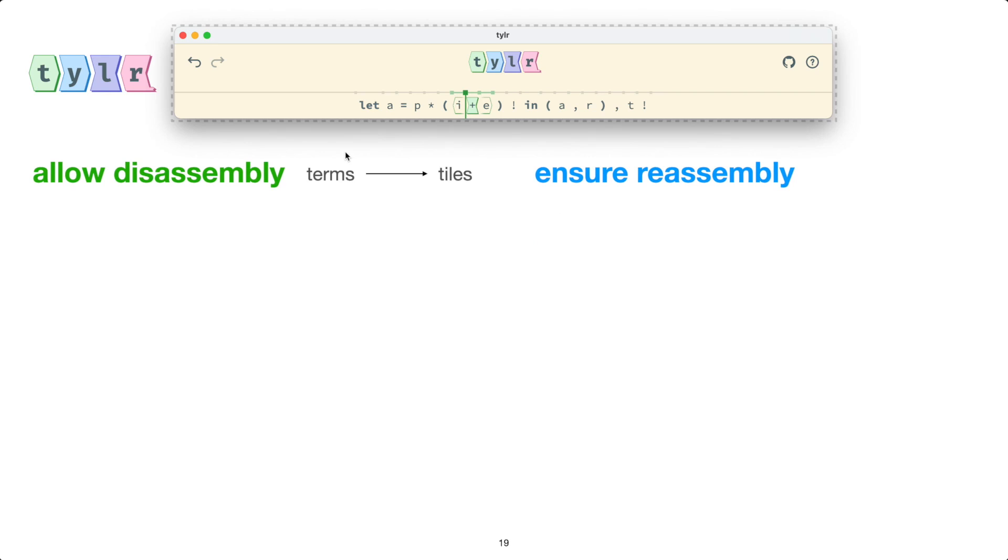So by default, Tyler shows us the parsed term structure of our program. So notice as I pan around and within Tyler that every shape that we see has this convex hexagonal outline. I can turn on tile view in Tyler to show that these terms disassemble into sequences of tiles. So here, this term A comma R is now going to become a sequence of these three tiles: A comma and R.